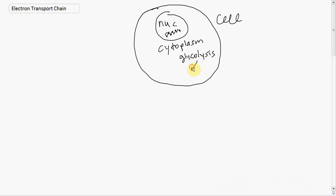Glycolysis produces two pyruvates for each round. That pyruvate moves from the cytoplasm into an organelle known as the mitochondria.